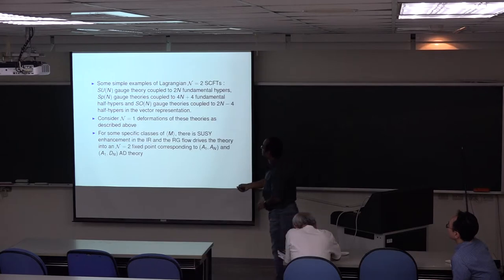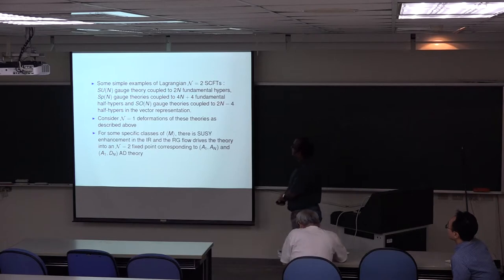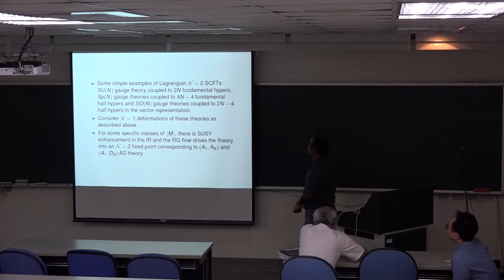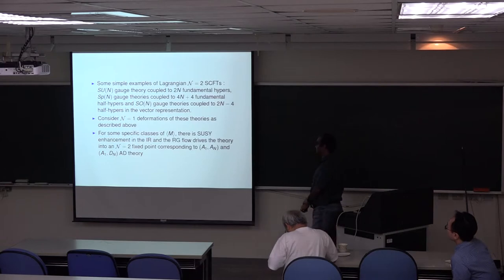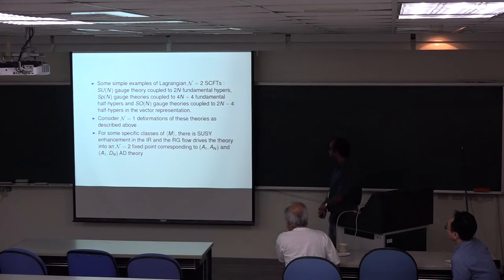Let's move on to some simple explicit examples. Simple examples of Lagrangian N equals 2 SCFTs include SU(N) gauge theory with 2N fundamental hypers, SP(N) gauge theories with 4N fundamental half-hypers, and SO(N) gauge theory with 2N minus 4 half-hypers in the vector representation. The corresponding flavor symmetries are SU(2N) for SU(N) — unless N equals 2 when it becomes SO(8) — SO(4N+4) for SP(N), and SP(2N-4) for SO(N). We considered N equals 1 deformations of these theories as described, and found that for specific classes of nilpotent vevs, there is a SUSY enhancement in the IR, and the RG flow drives the theory into an N equals 2 fixed point corresponding to A1,AN and A1,DN Argyres-Douglas theories.